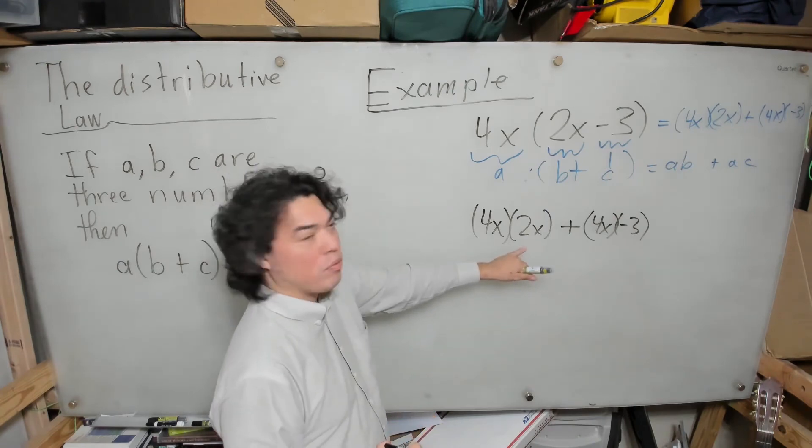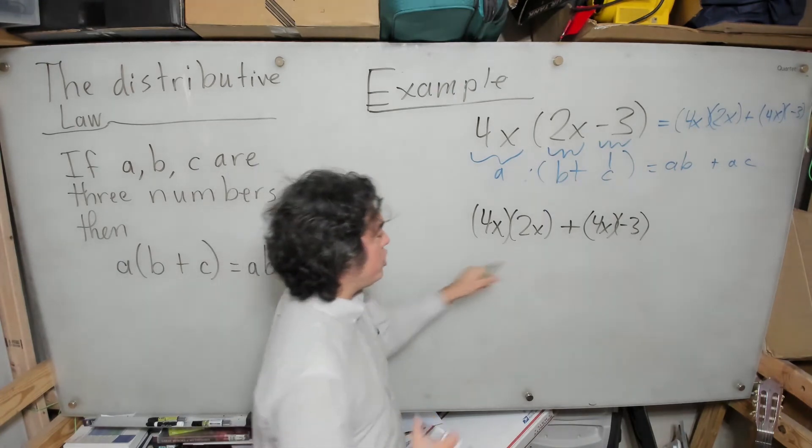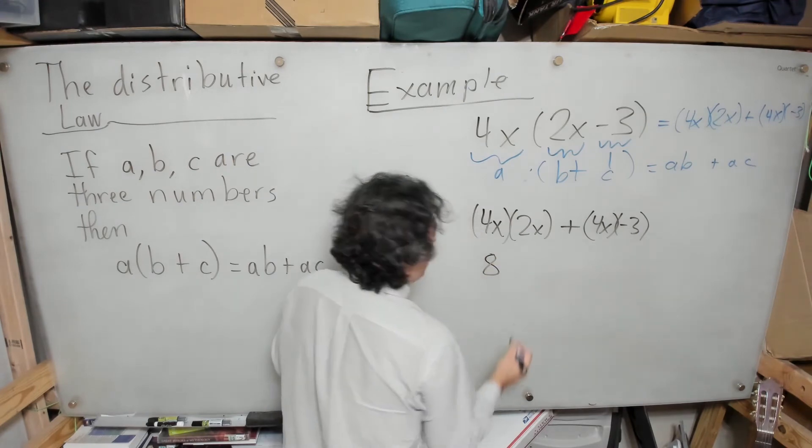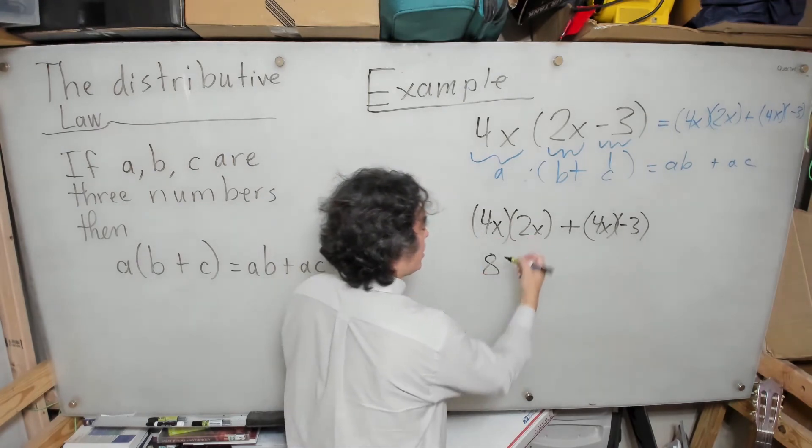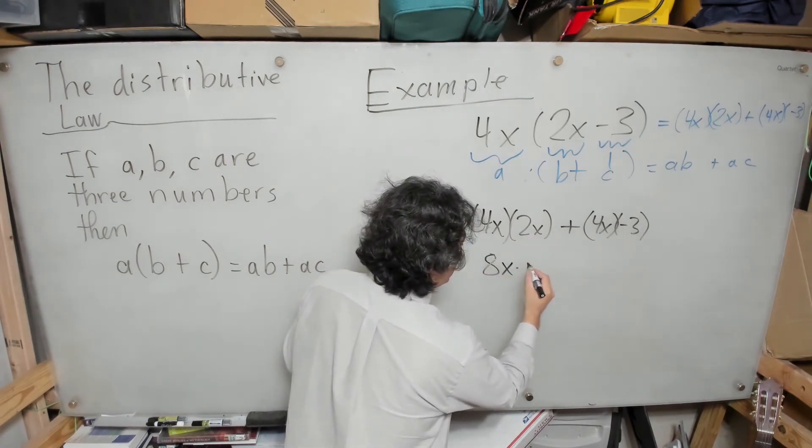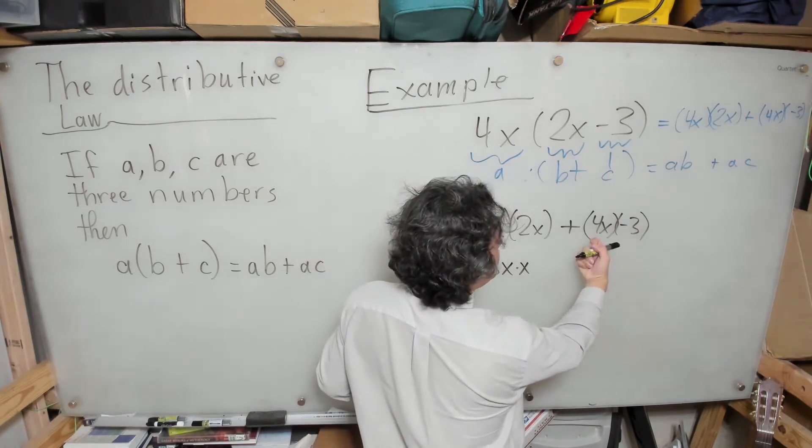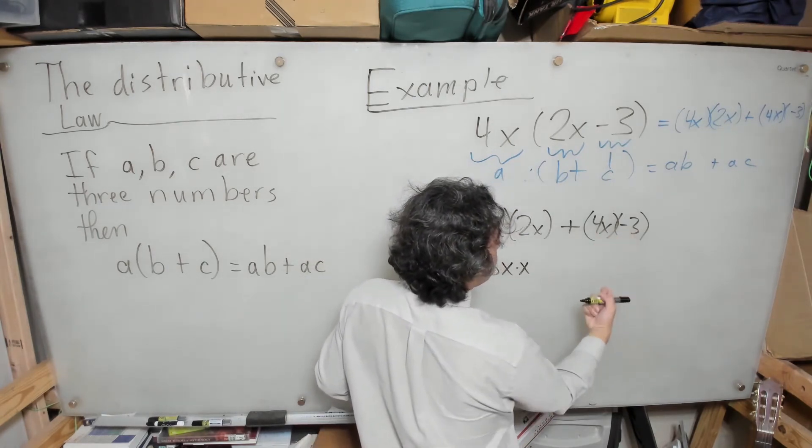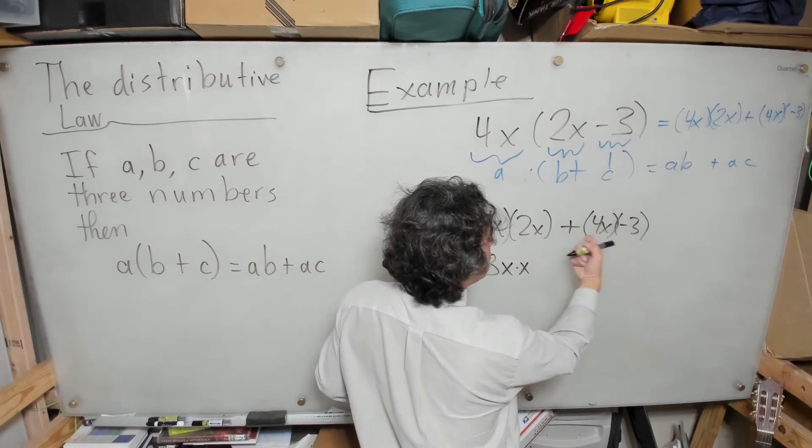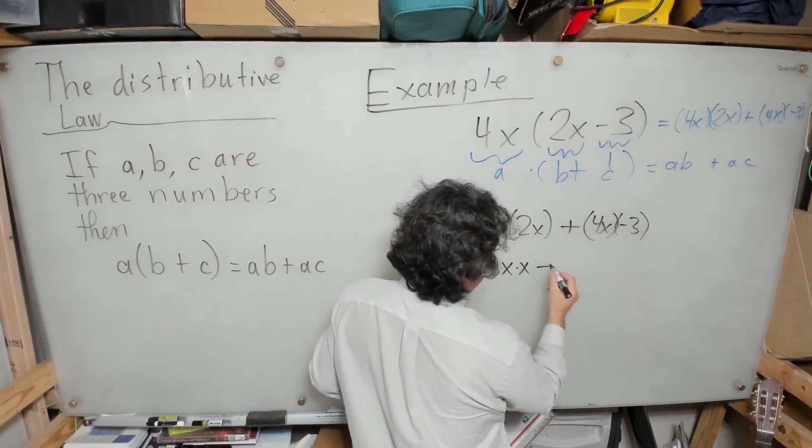Now here I can multiply the numbers: 4 times 2, which is 8, and I'm going to have x times x. I'm going to write that down like this temporarily. Then, 4 times negative 3, which is negative 12, so I'm going to have plus negative 12x.